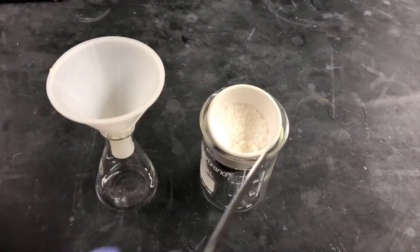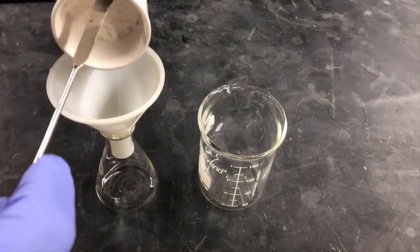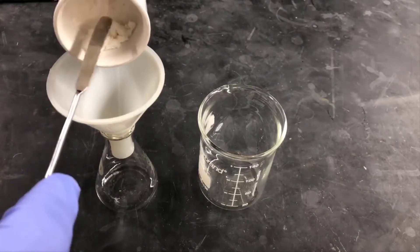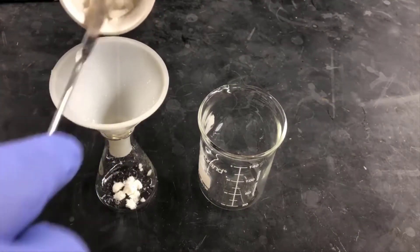I'll be doing the recrystallization in a small Erlenmeyer flask. The next step is to transfer the crystals into the Erlenmeyer flask. Here I'm using a powder funnel to make it a little easier to get them in.